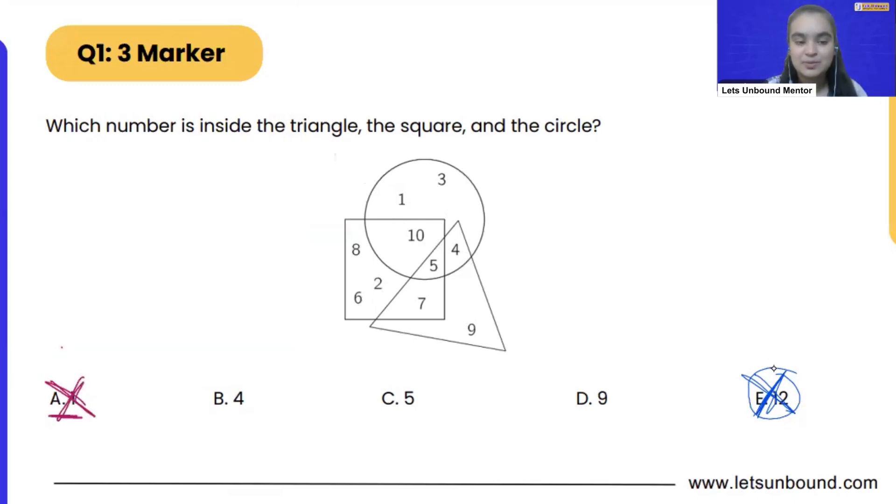Now let's see option B. That is number 4. Now if you will see number 4 is here. That is in circle and the triangle. It is inside triangle and the circular part. But not in square. It is not inside square. So that means this option is also wrong.